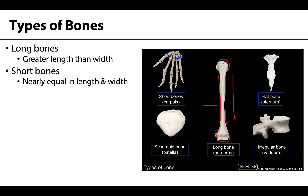Short bones are more cube-like with nearly equal length, width, and even depth. Your carpal bones are really excellent examples of short bones. Many of the tarsal bones associated with the ankle region are also short bones. These are almost completely composed of spongy bone except for a thin outer layer of compact bone.